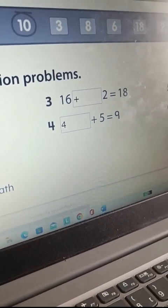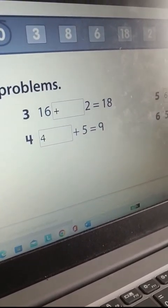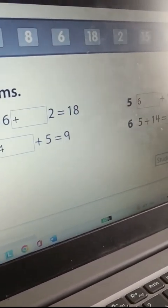Number four. Four plus five equals nine. Okay.